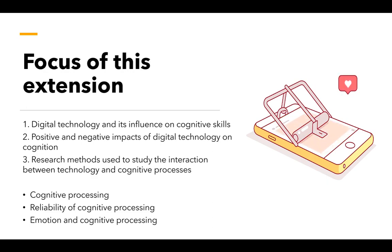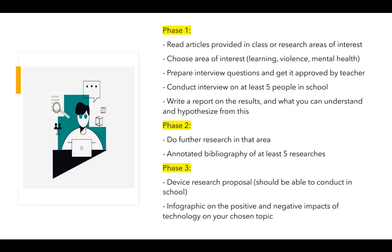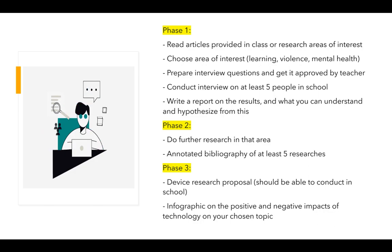The unit also looks at specialized research methods put in place to investigate these phenomena. There isn't a whole lot of theory involved in this extension unit — rather, a range of research either suggesting that digital technology aids and improves cognitions, or suggesting that it harms or deteriorates our cognitive processing and ability. Because this topic is so relevant to our current situation, you will be working on it as an individual research project, with five different submissions, each of which will be graded.